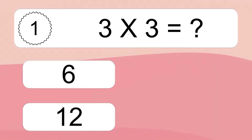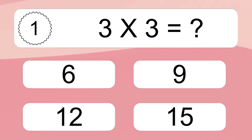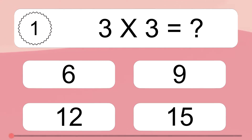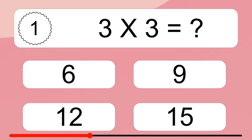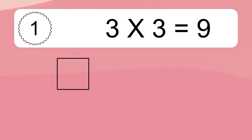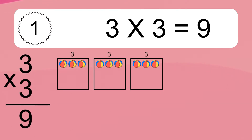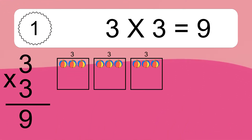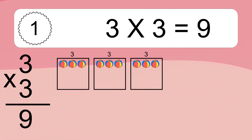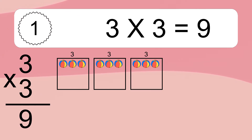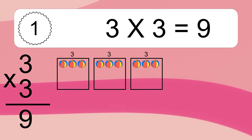3 times 3 equals what? 3 times 3 equals 9. We have 3 boxes, and each box has 3 colorful balls inside. If you count all the balls in all the boxes together, you will have 3 times 3 balls. This equals 9 balls.